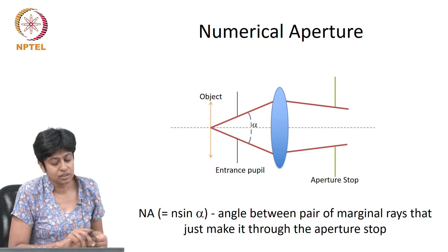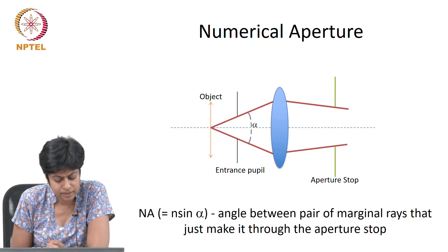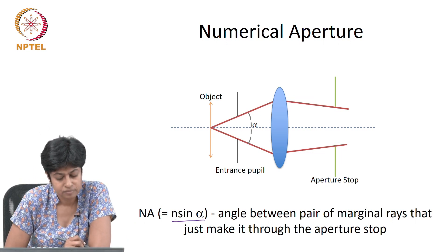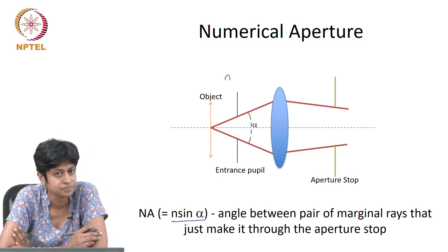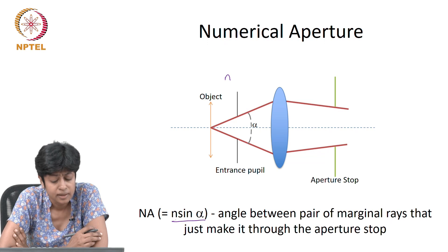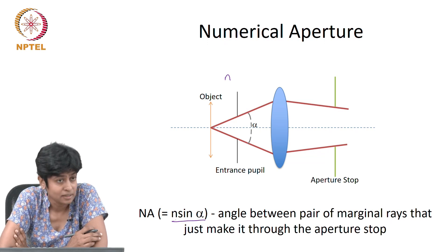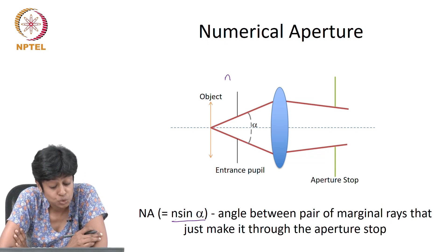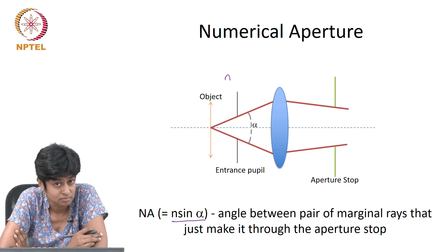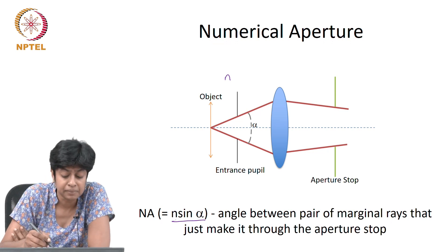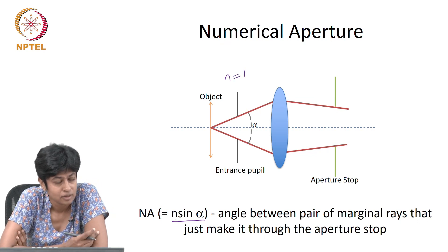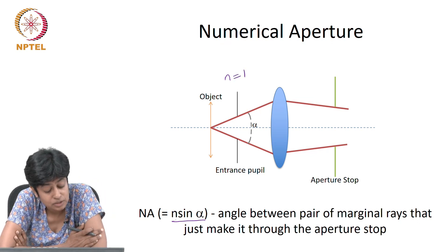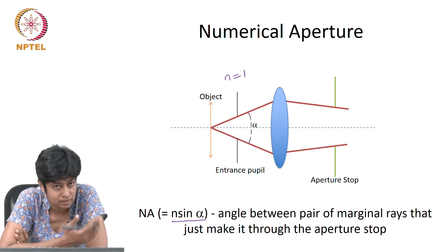So, the numerical aperture is defined as n sin α, where n is the refractive index of the medium. Clearly, you want this to be a large number. Let us say the medium around was air, so this is equal to 1. What is the largest numerical aperture you could mathematically have?